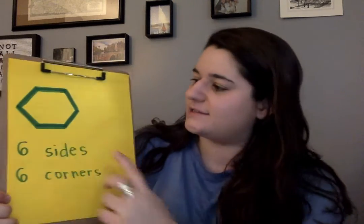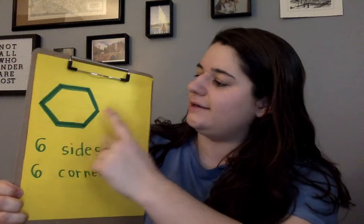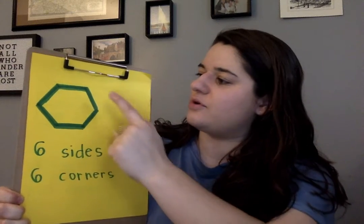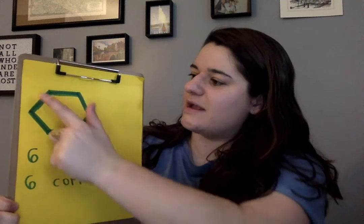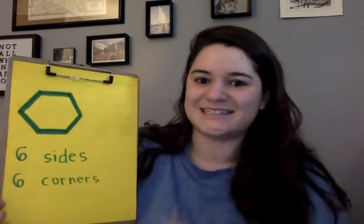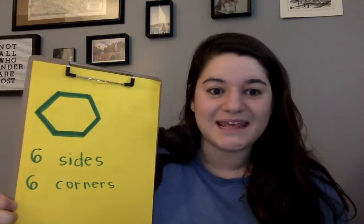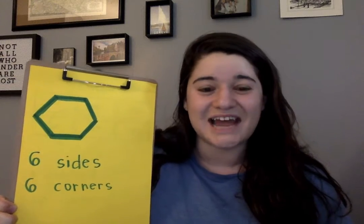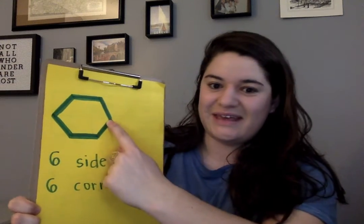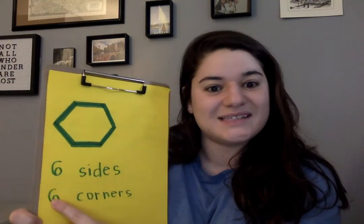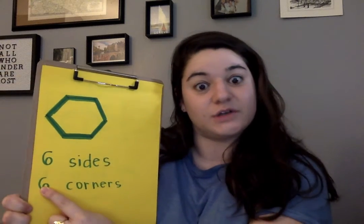Let's count those sides: one, two, three, four, five, six. A hexagon has straight lines and also has six corners.